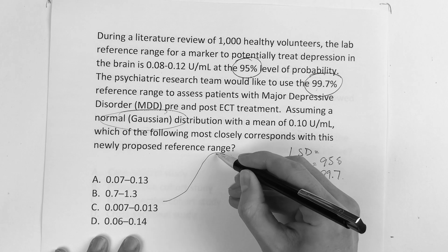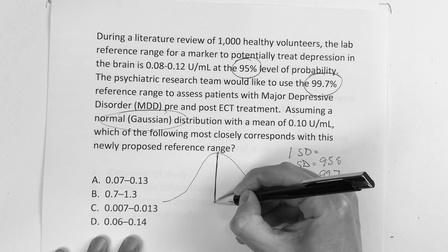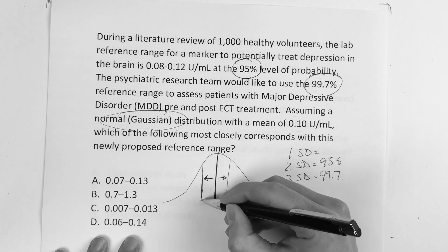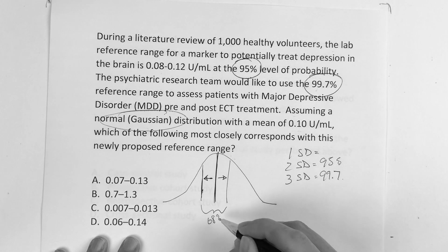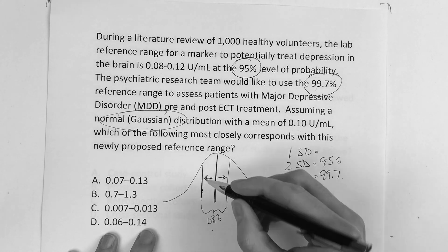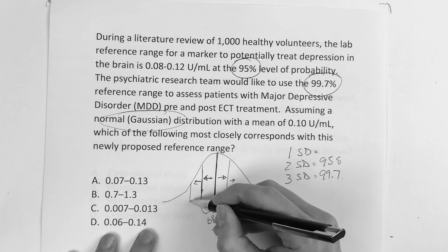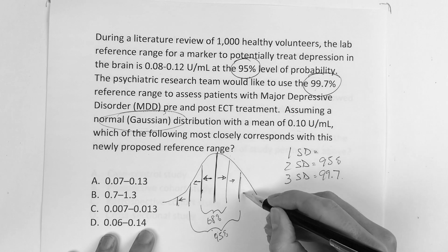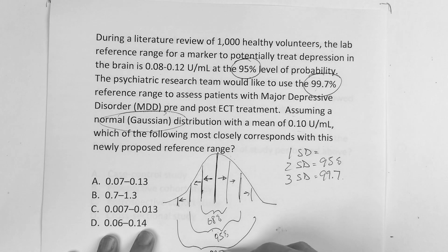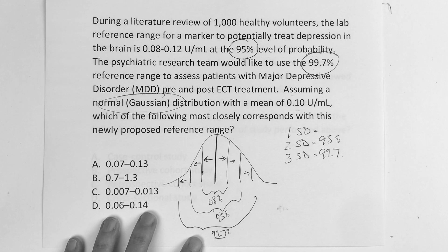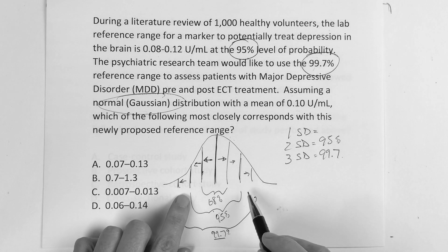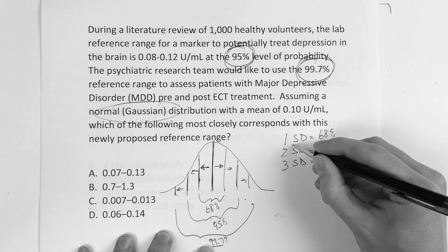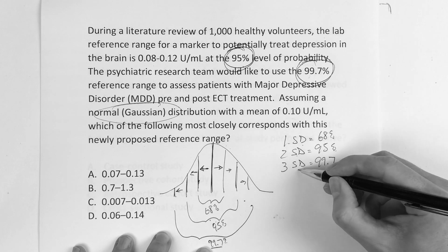They say this normal Gaussian distribution, right, the bell-shaped curve. So one standard deviation, like if here's the mean, the very very middle, the mean, the average - if you go out one standard deviation from that in both directions, that should include 68% of the population in this study. If you go out another standard deviation, that should include 95% of everybody. And if you go out one more standard deviation, that's going to include basically 99.7% of everybody, essentially everybody out there.